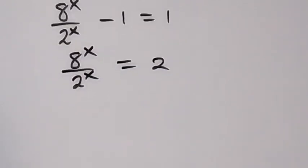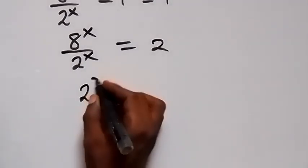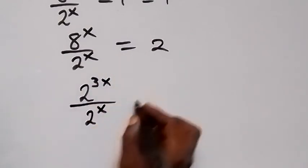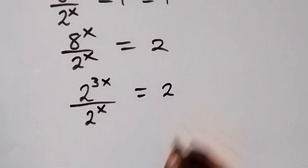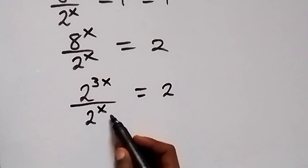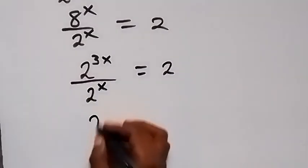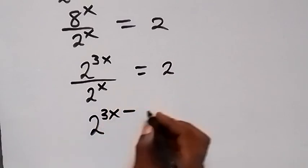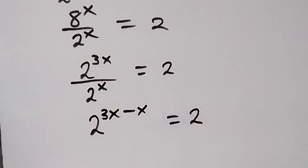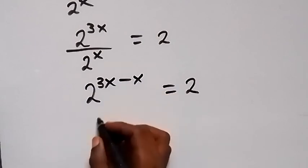Let's change 8 to base 2: 8 is 2 raised to power 3, so we have 2 raised to power 3x over 2 raised to power x equals 2. Applying the law of indices — same base dividing, we subtract the indices — this gives 2 raised to power 3x minus x equals 2.